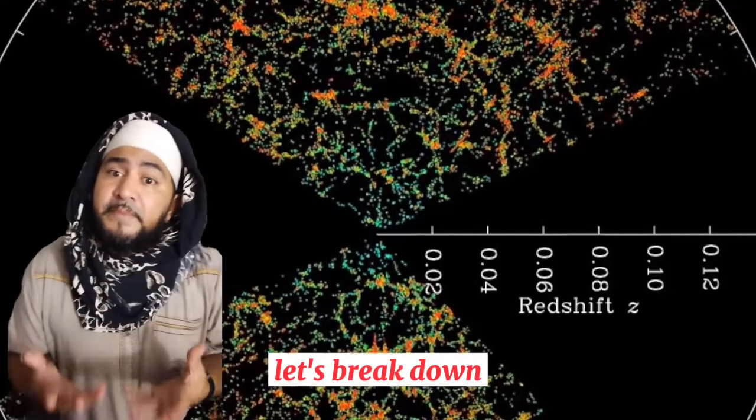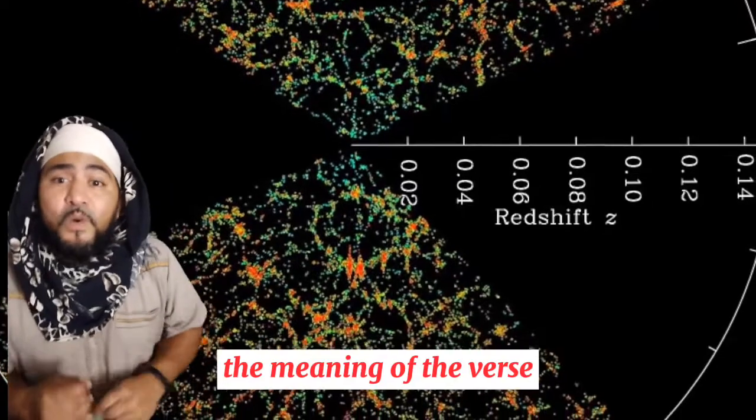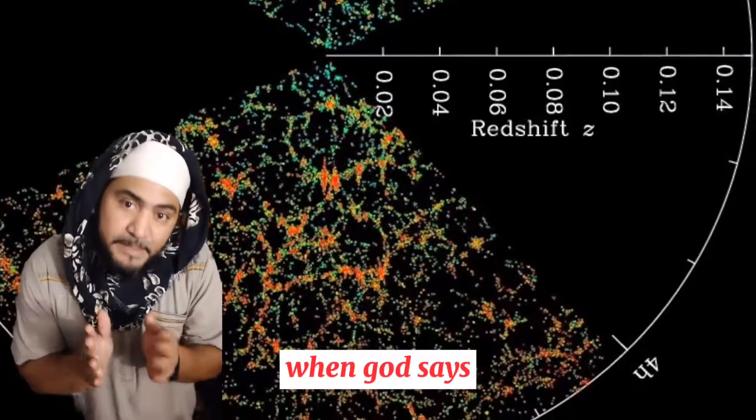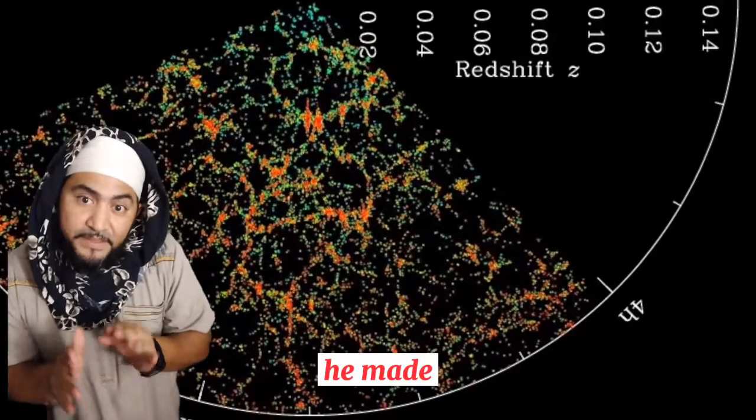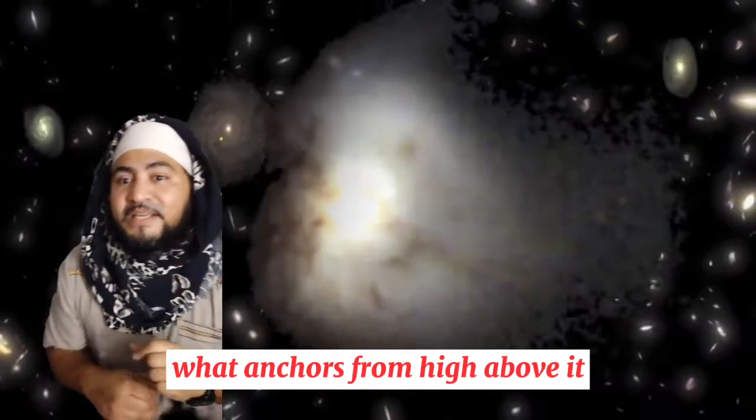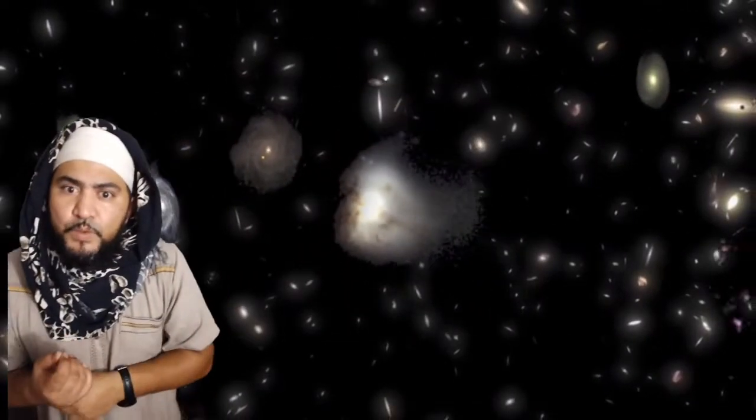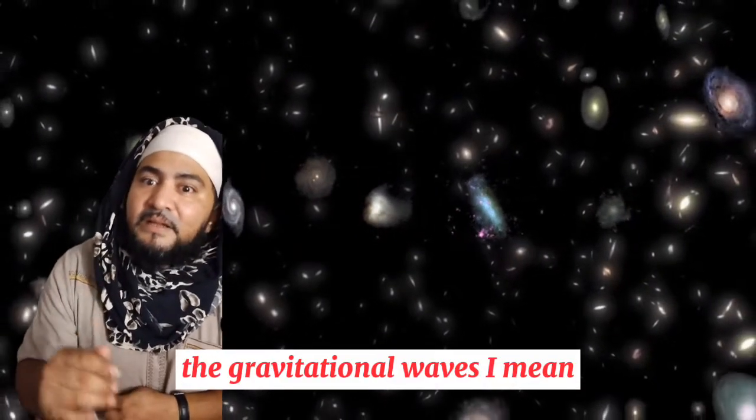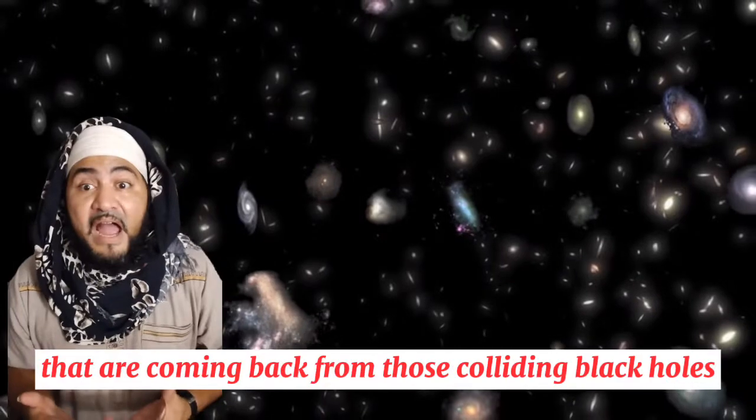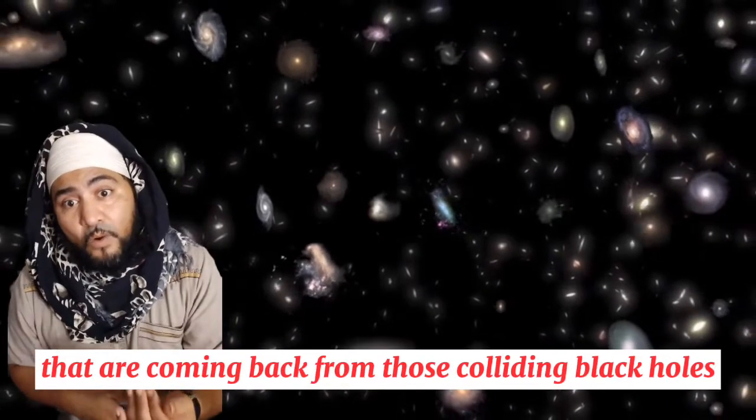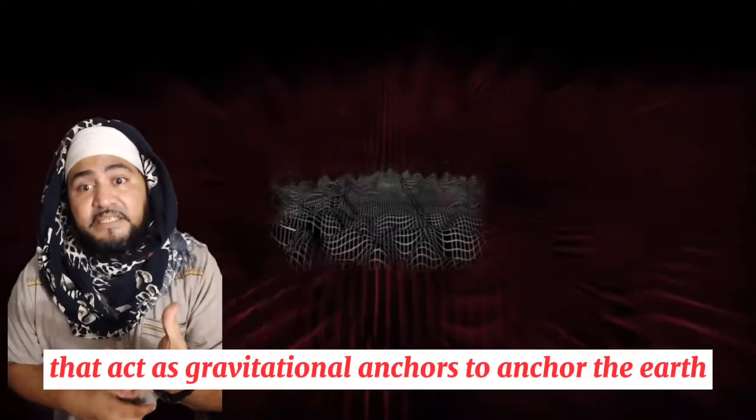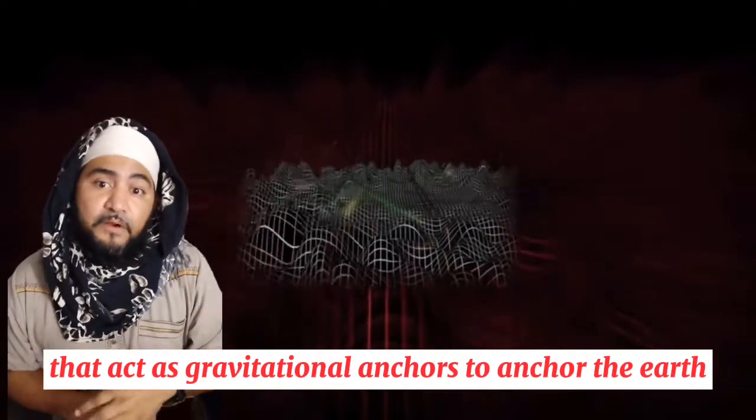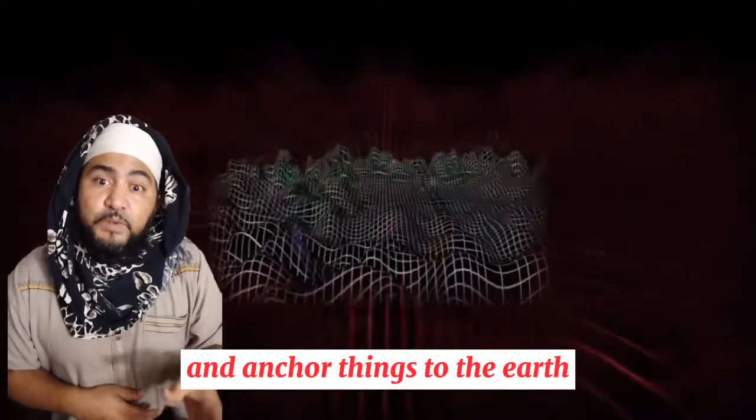Let's break down the meaning of this verse. What anchors? When God says He made in the earth what anchors from high above it, He is referring to the gravitational waves that are coming from those colliding black holes in space that act as gravitational anchors, anchoring the earth and anchoring things to the earth.